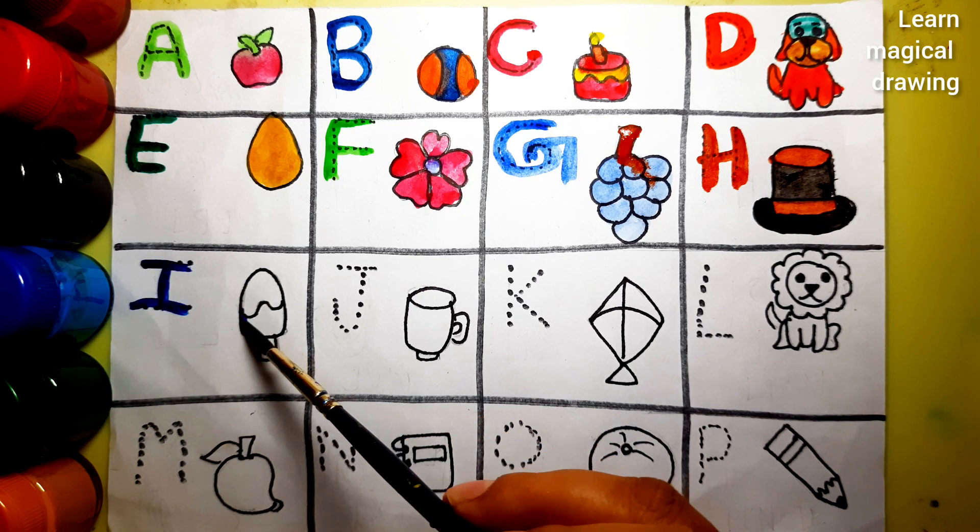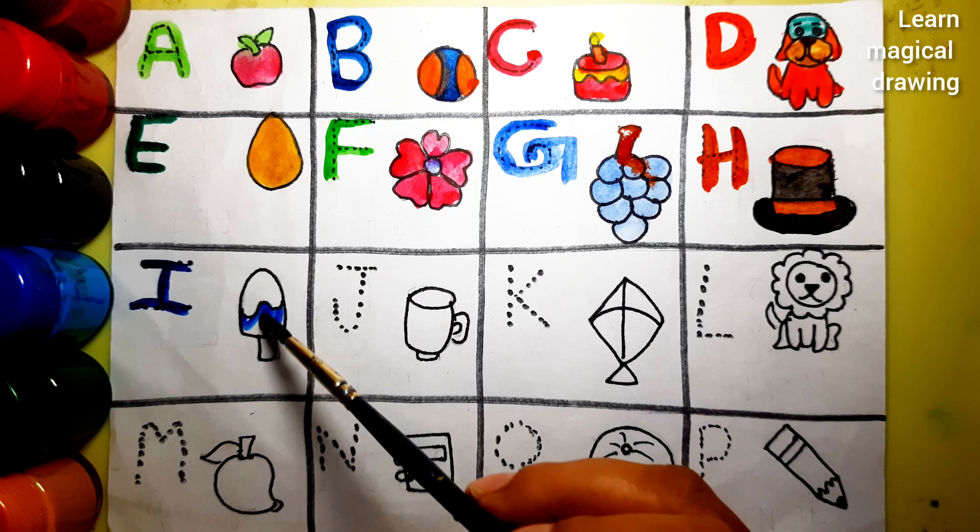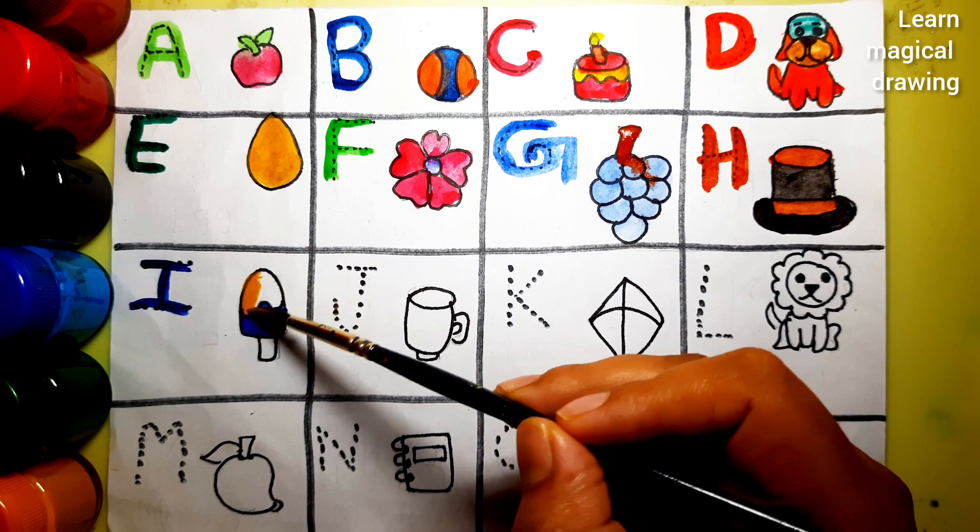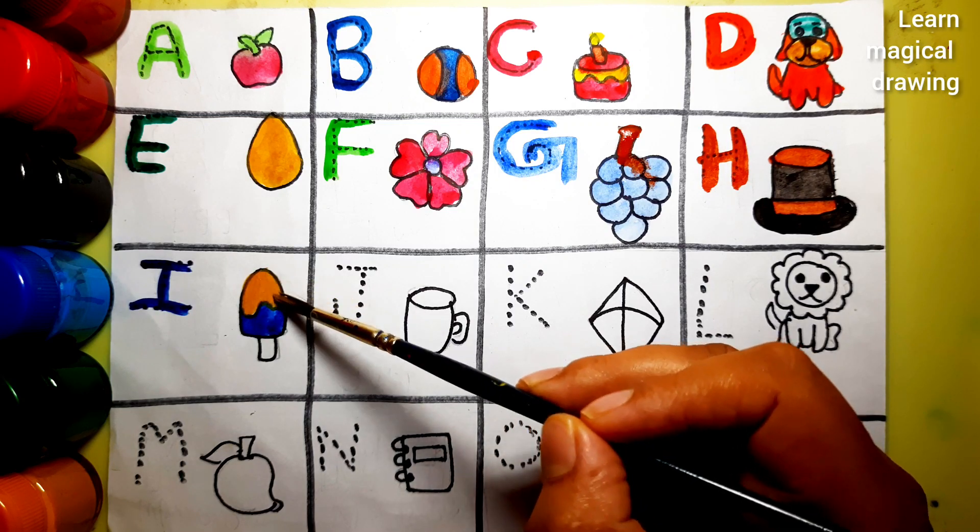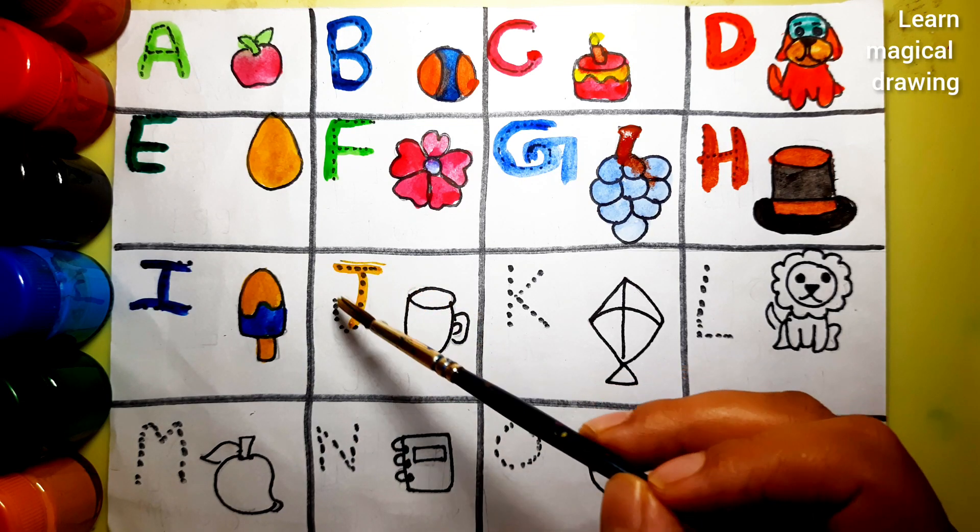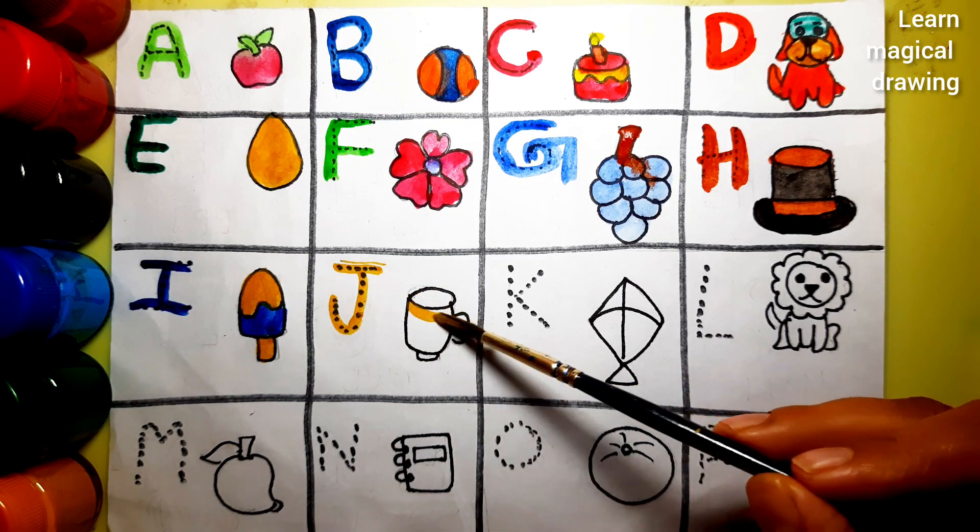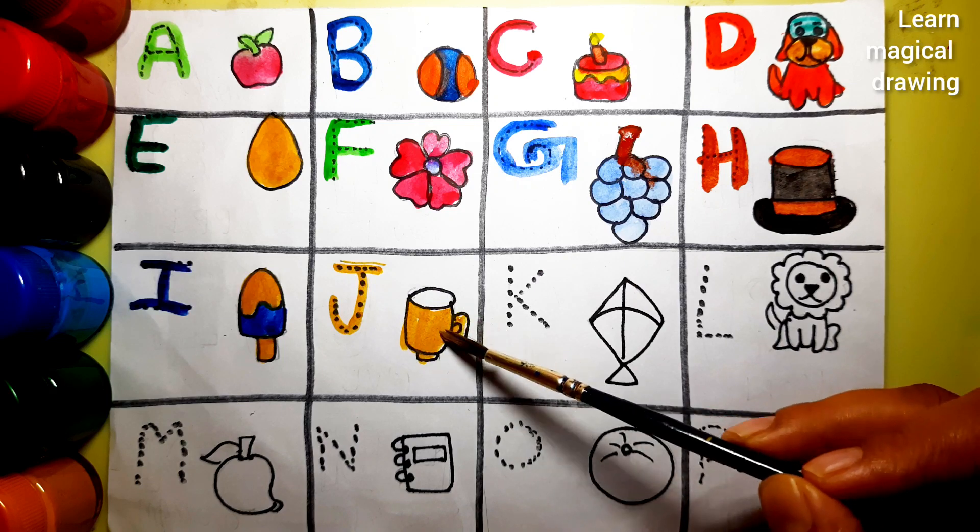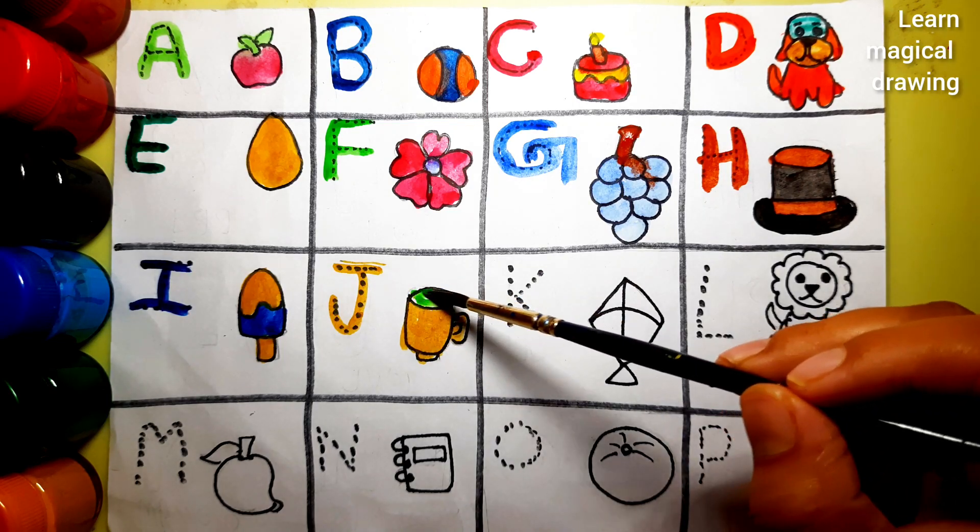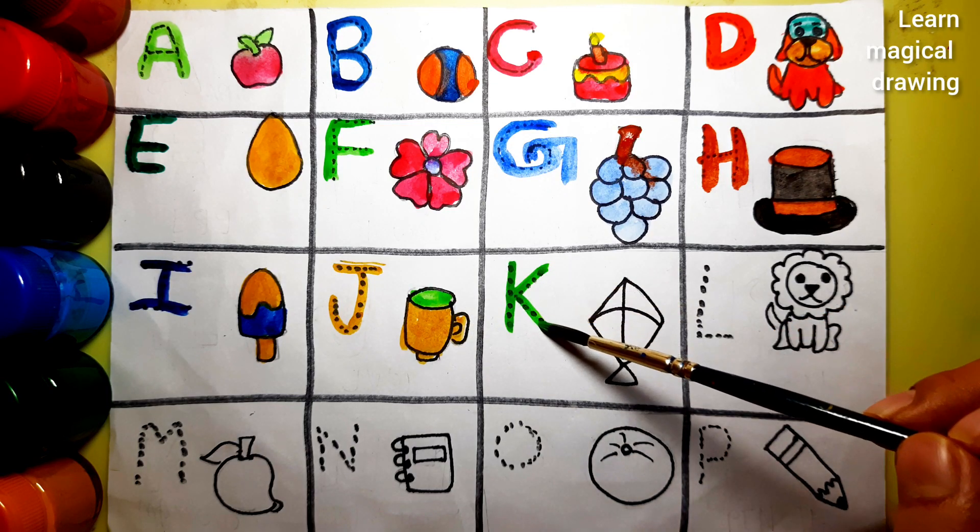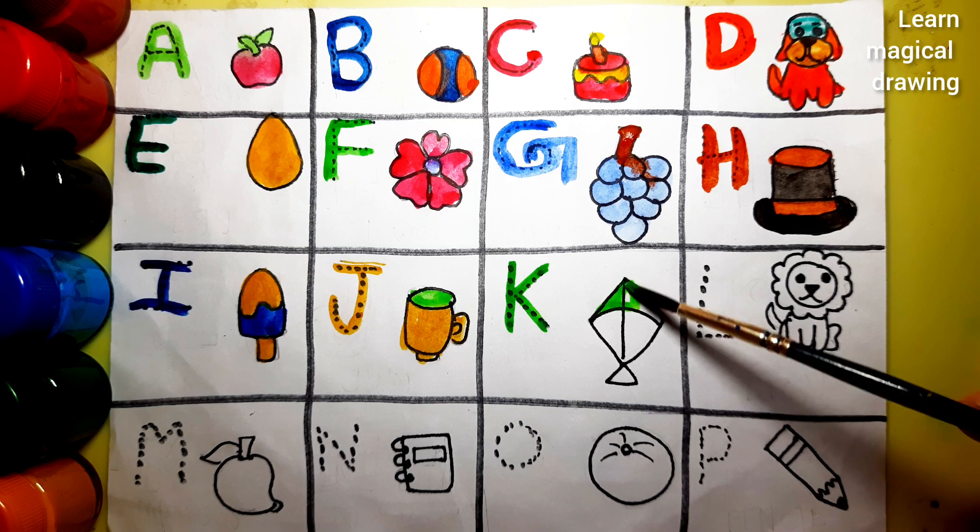I, I for ice cream. J, J for jug. K, K for kite.